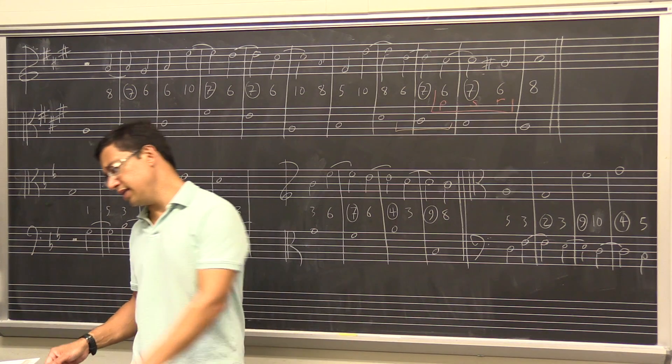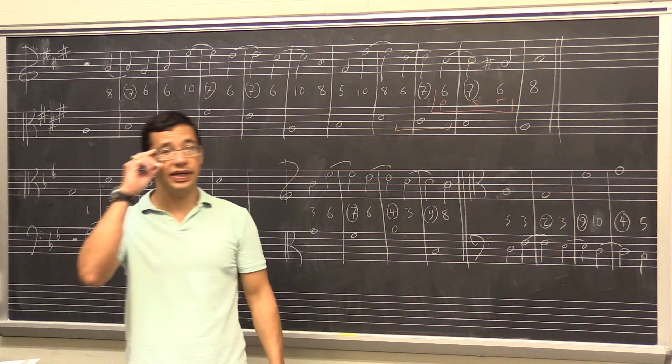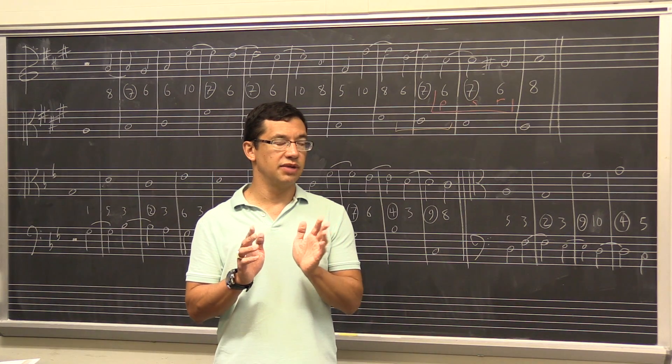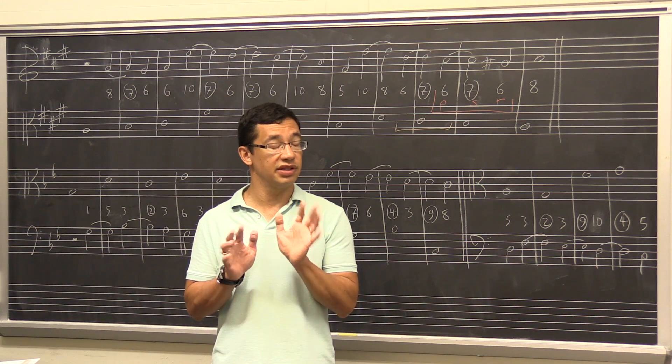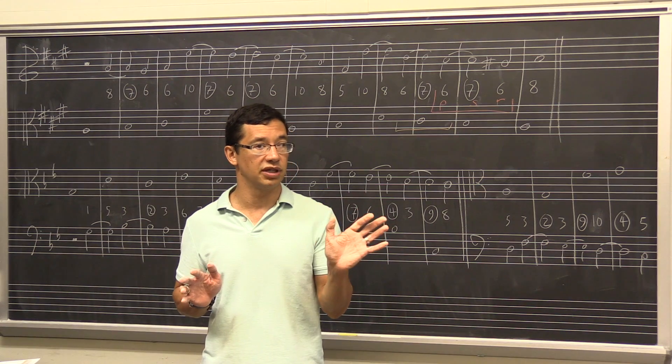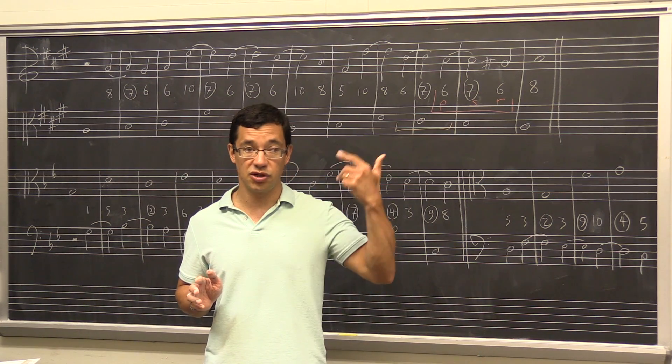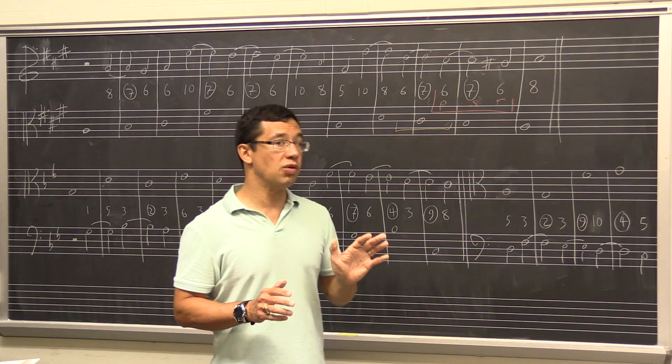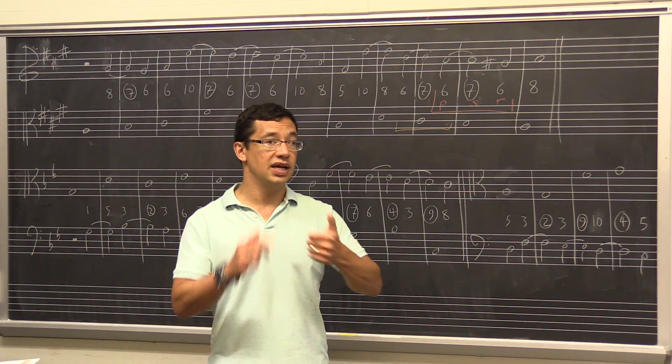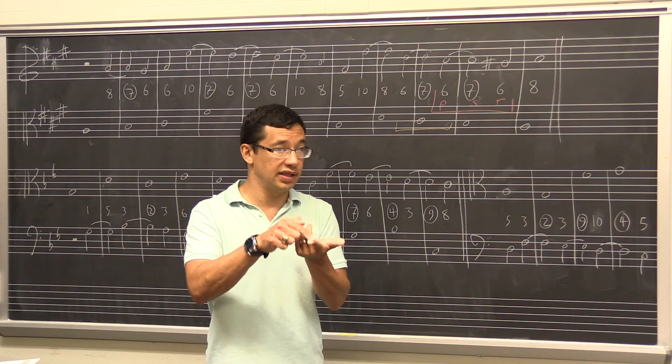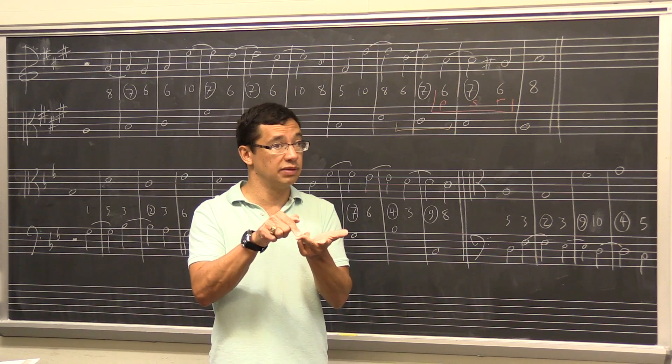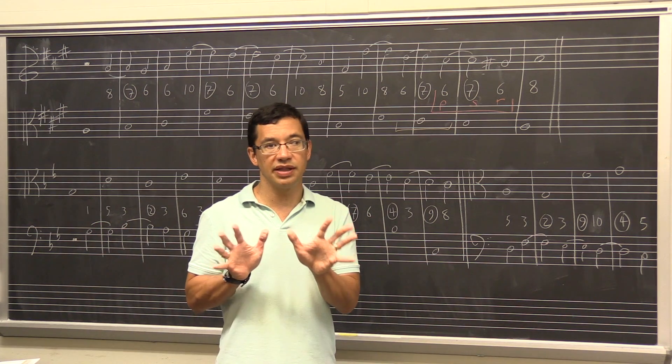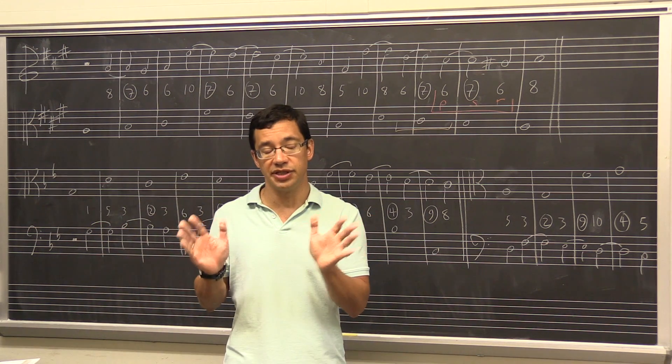There's one other thing. You'll recall in first species, maximum of three perfect consonances, three of the same parallel perfect consonances in a row. So parallel thirds, great. But three thirds in a row, you need to do something else. In second species, we were concerned downbeat to downbeat. A third on a downbeat, a third on the next downbeat, a third on the downbeat after that. Maximum of three. Then you need to do something else. That was less of a concern in third species, although again, we don't want to overdo it.